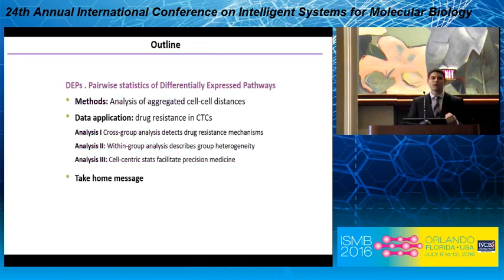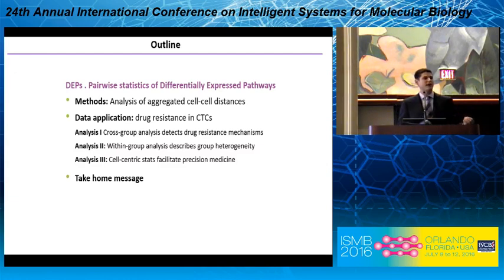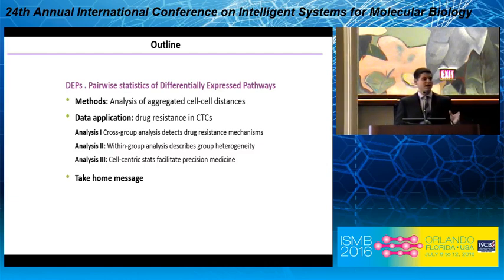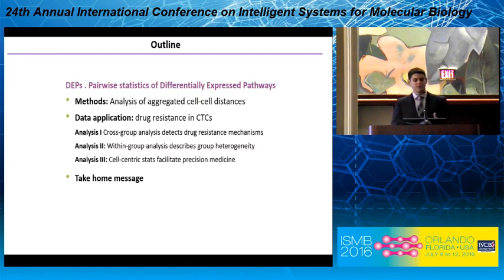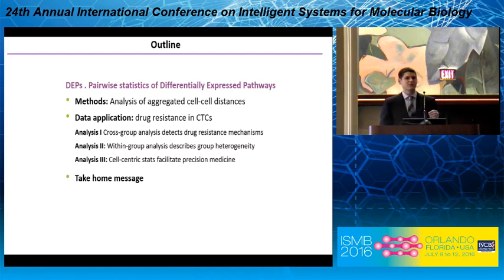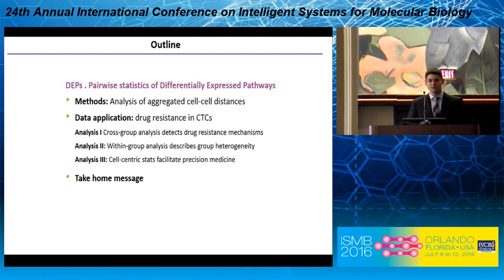Here's a quick outline of the talk. I'll walk through the construction of pairwise statistics of DEPs, then discuss how we aggregate these, and apply this to the CTC data. Rather than covering all methods and then all results, I'll present a method and then give a result as we go. You can view these aggregations from three perspectives: cross-group, within-group, and cell-centric statistics. The cell-centric statistics is what I alluded to — predicting responsive therapy from a single circulating tumor cell.